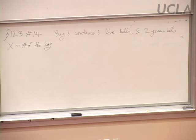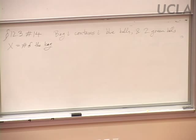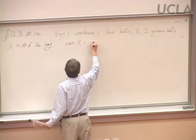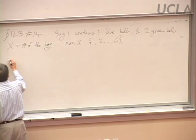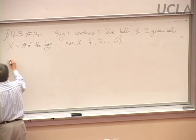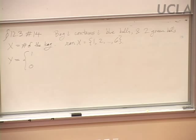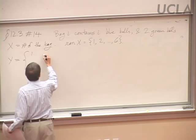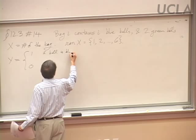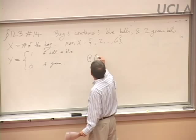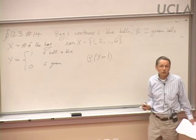X is a function, a random variable — it assigns to each outcome the number of the bag we got, so it could be anything from one to six. It's a discrete random variable. And then we're interested in the color: as a random variable Y with range {0, 1}, it's 1 if the ball we end up with is blue, and 0 if it's green.